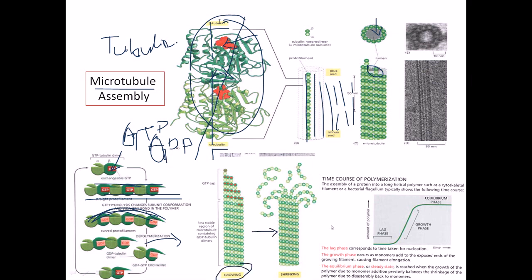There is a growing phase and a shrinking phase of the tubulin polymer. In the growing phase, the structure goes straight, but in the shrinking phase, when GTP is hydrolyzed to GDP, the tubulin-GDP complex is unstable and enters a curved state, dissociating like the peeling of a banana. This can be seen in electron micrographs.